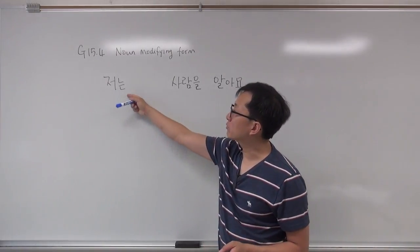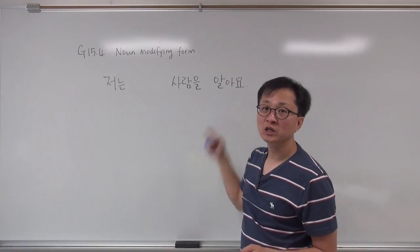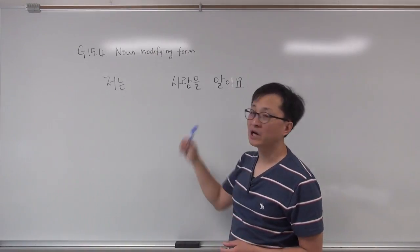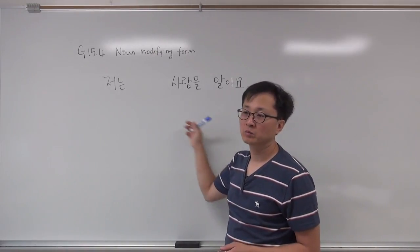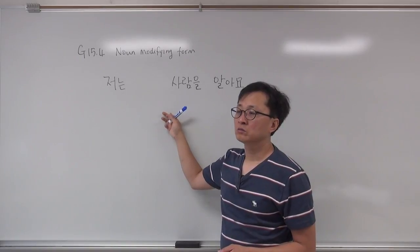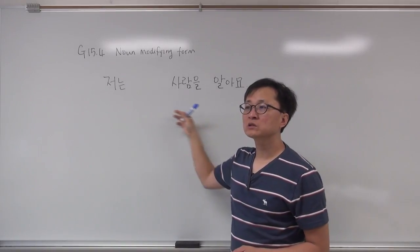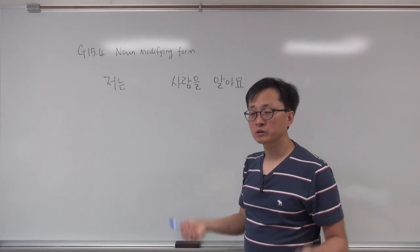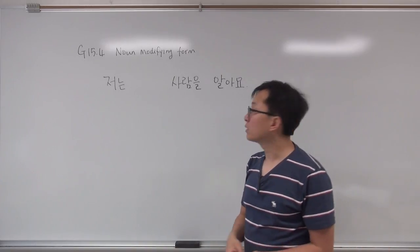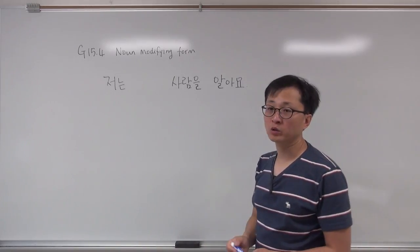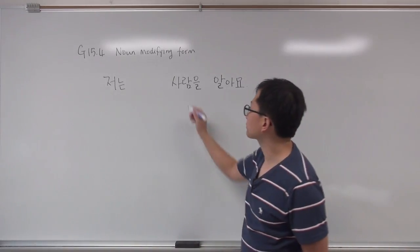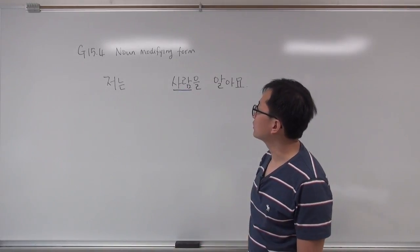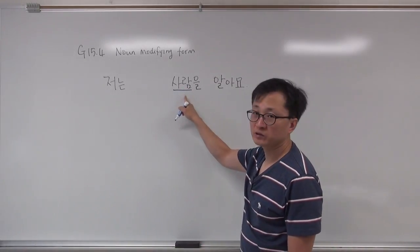For example, let's think about this kind of sentence: 저는 사람을 알아요 — I know a person. This sentence doesn't give us a lot of information. I know a person — everybody knows at least some people. So let's add more information on this noun.